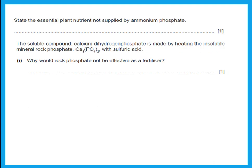State the essential plant nutrient not supplied by ammonium phosphate. A fertilizer needs to have nitrogen, phosphorus, and potassium — the one not present here is potassium. The soluble compound calcium dihydrogen phosphate is made by heating the insoluble rock phosphate with sulfuric acid. Why would rock phosphate not be effective as a fertilizer? Because it has only phosphorus — it doesn't provide nitrogen or potassium.